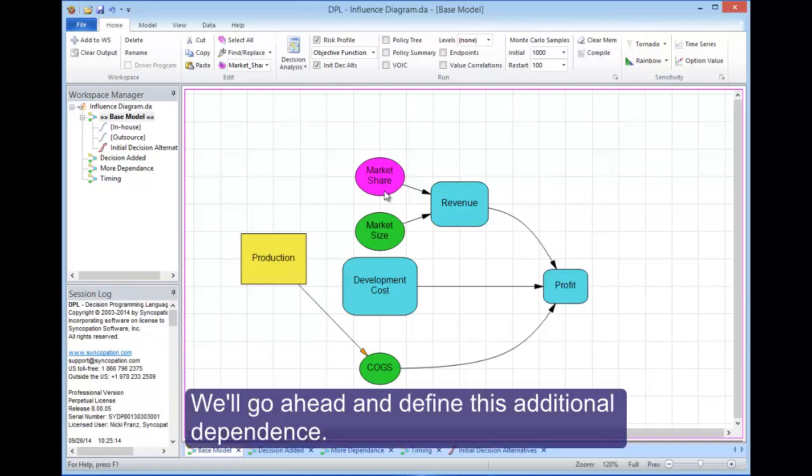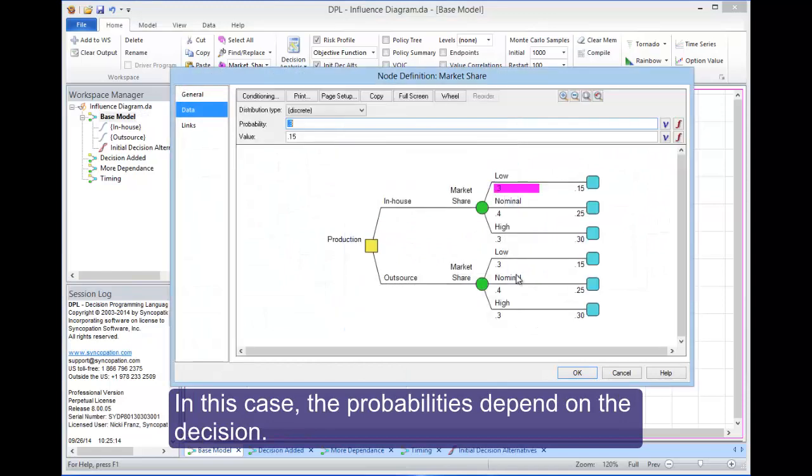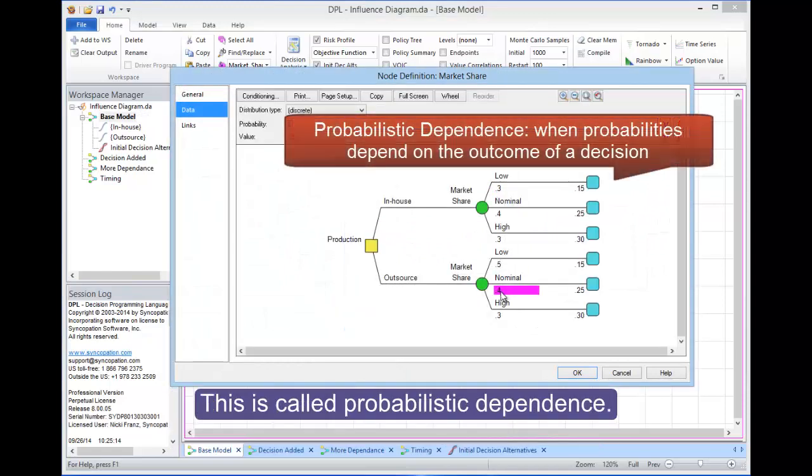We'll go ahead and define this additional dependence. In this case, the probabilities depend on the decision. This is called probabilistic dependence.